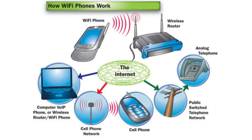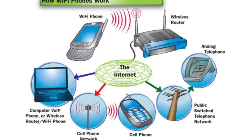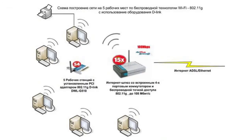The access point transmits its service set identifier by means of special map messages at a speed of 0.1 Mbps every 100 ms. Therefore, the speed of 0.1 Mbps is the least possible speed to transmit data over Wi-Fi.